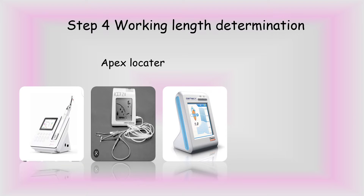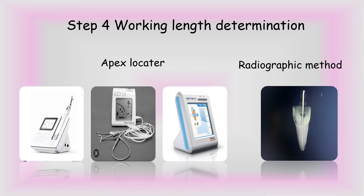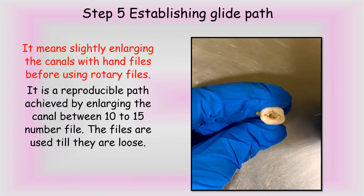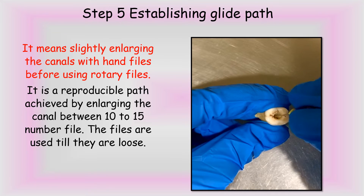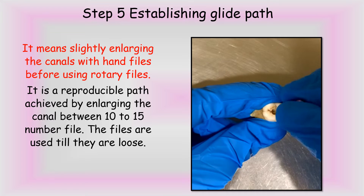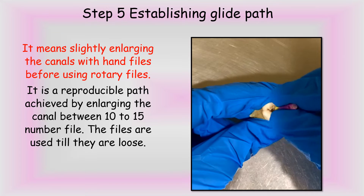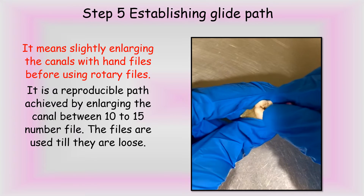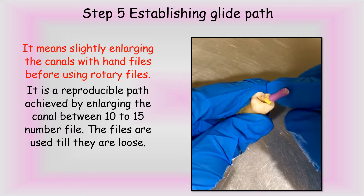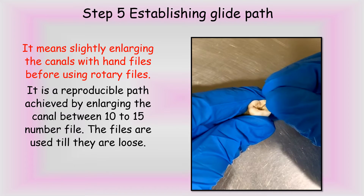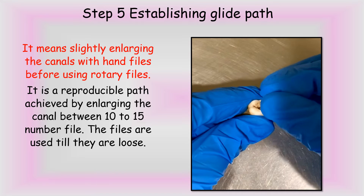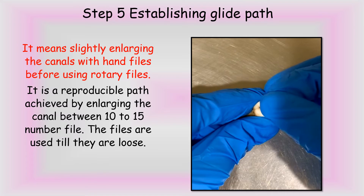The next step is working length determination, which can be done with the help of apex locators or by using the radiographic method. Step 5 is establishing the glide path, which means slightly enlarging the canals with hand files before using rotary files. The glide path is a reproducible path achieved by enlarging the canal between 10 and 15 number file. In this video, we use a 10 number file and prepare the canal until the file becomes loose in the canal.